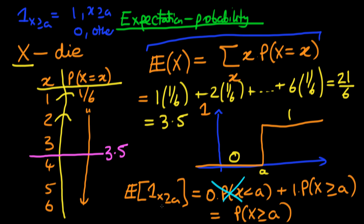This is quite an interesting result because it connects the expectation of the indicator function with the probability. This is important in statistics — Joe Blitzstein discusses it in his lecture series and calls it the fundamental bridge between expectation and probability. Anyway, just a short video to explain what I mentioned at the end of the last video. I hope that helps.